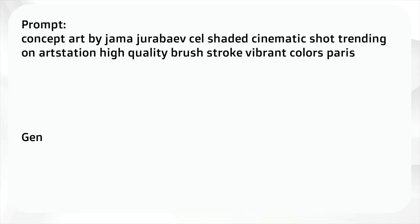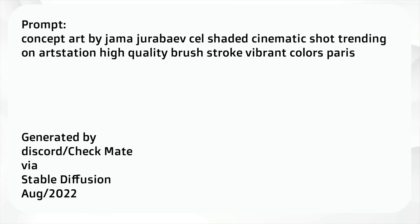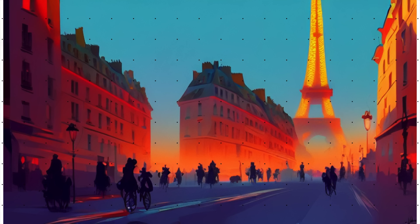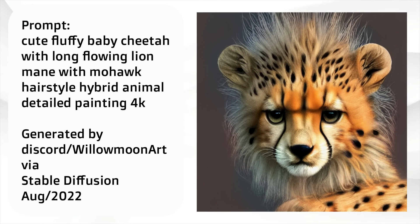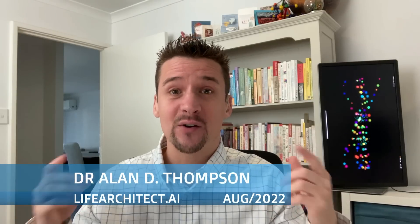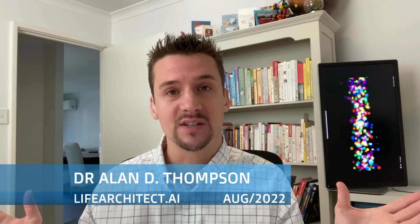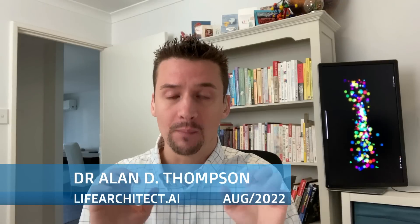Concept Art of Paris. And this one: 'a cute fluffy baby cheetah with long flowing lion mane with mohawk in 4K' — an animal that did not exist before this AI created it. Just some of my favorites that I know the prompts for. Thanks to all the artists who generated those prompts. The images are available to the public, but the original prompter apparently owns the copyright to those images.